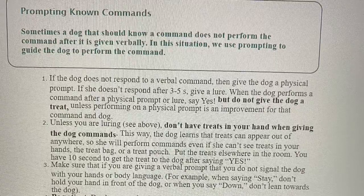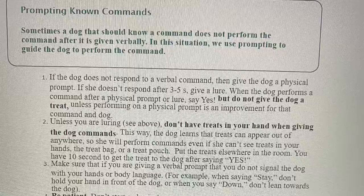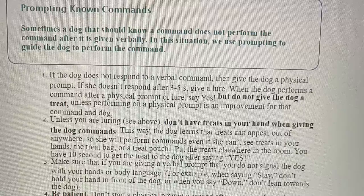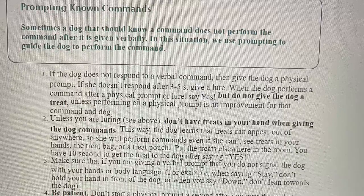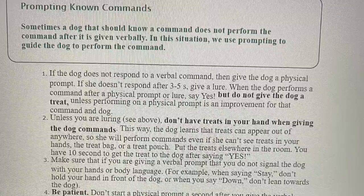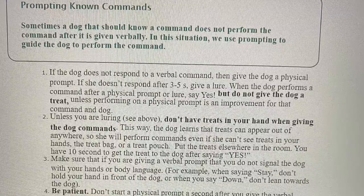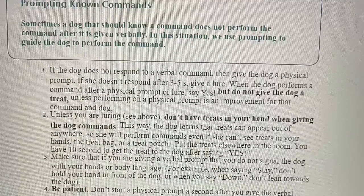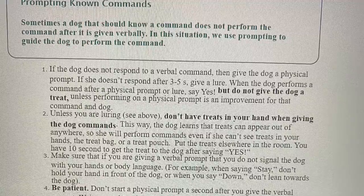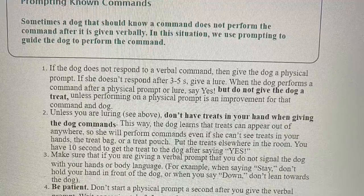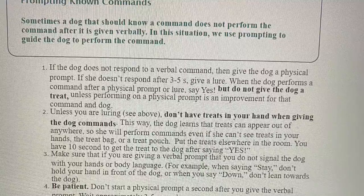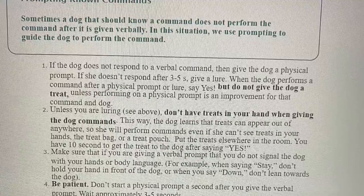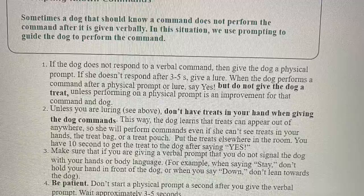Prompting Known Commands. Sometimes a dog that should know a command does not perform the command after it's given verbally. In this situation, we use prompting to guide the dog. Rule 1: If the dog does not respond to a verbal command, give the dog a physical prompt. If she doesn't respond after three to five seconds, give a lure. When the dog performs a command after a physical prompt or lure, say yes, but do not give the dog a treat — unless performing on a physical prompt is an improvement for that dog and command. Rule 2: Unless you are luring, don't have treats in your hands when giving the dog commands. This way, the dog learns that treats can appear out of anywhere, so she will perform commands even if she can't see treats in your hands, the treat bag, or a treat pouch.